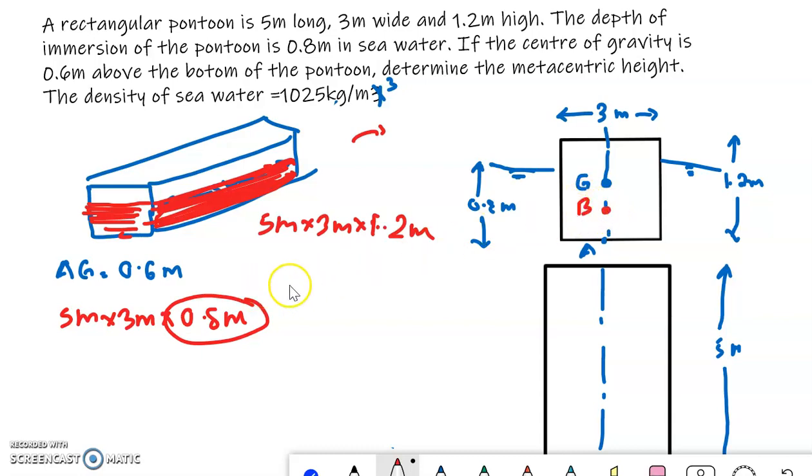If I mark it as over here, I can say AB will be equal to half of depth of immersion. Half of depth of immersion, that is half of 0.8, that is 0.4 meter.